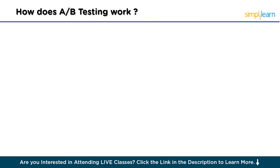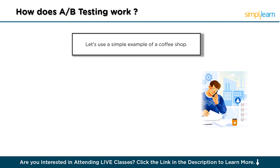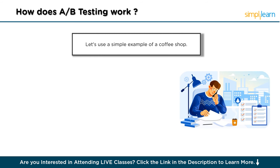Now let's look at how A-B testing works. Using a simple example: a coffee shop wants to increase the number of people signing up for its loyalty program. The owner comes up with two versions of a sign-up invitation. Version A uses a picture of a delicious-looking cup of coffee with the text 'Join our loyalty program,' while Version B has the same picture but adds 'Get a free coffee on us when you sign up today.'